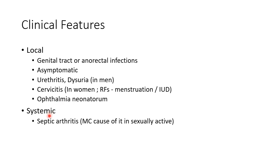The systemic features include septic arthritis, which is infectious inflammation of joints. Neisseria gonorrhea is in fact the most common cause of septic arthritis in sexually active young adults.